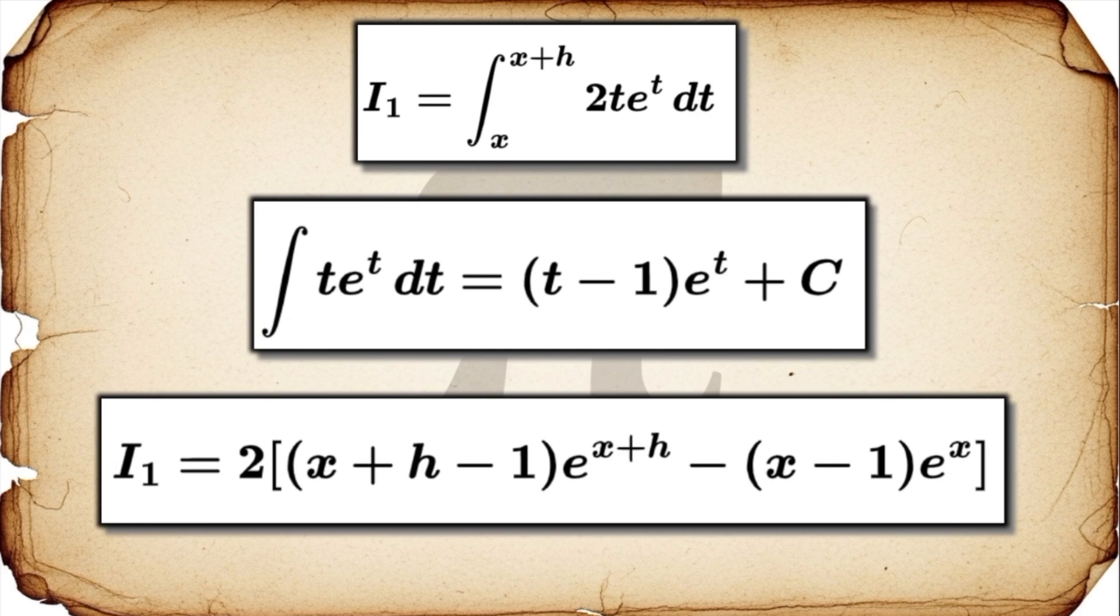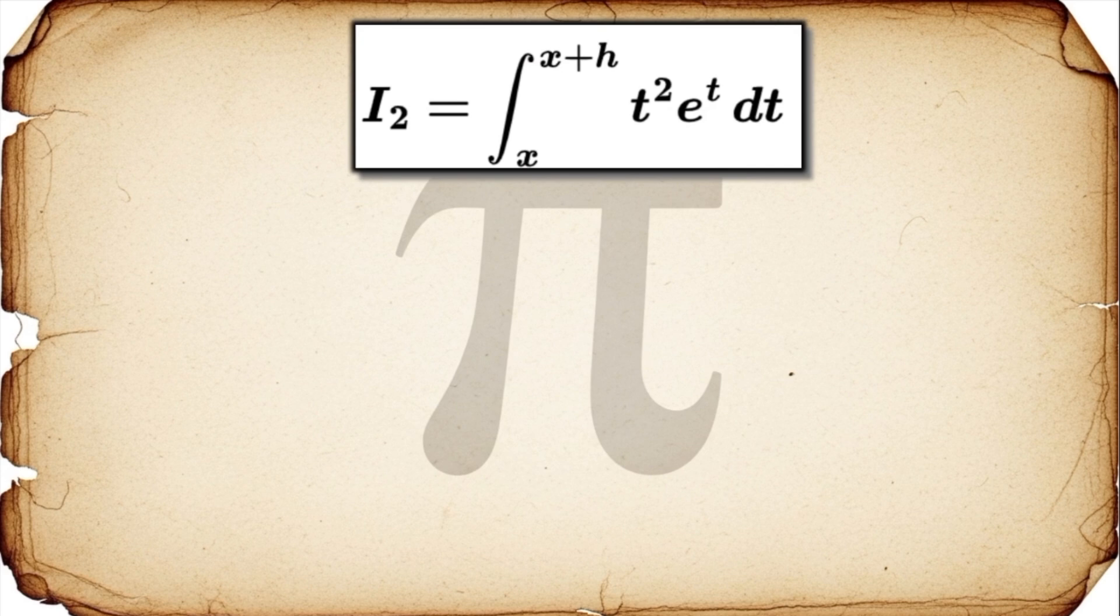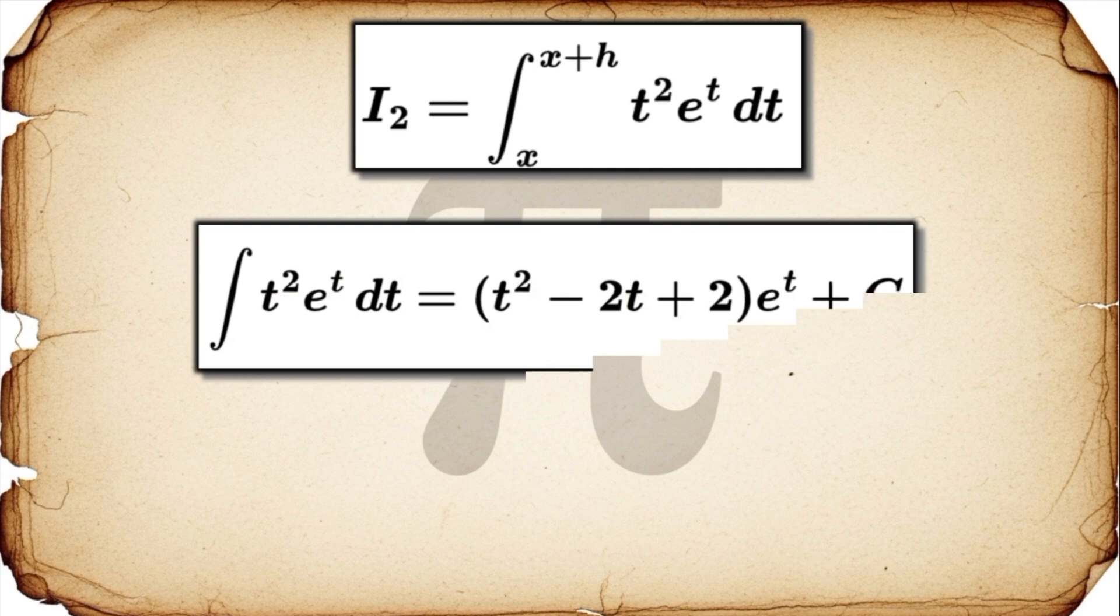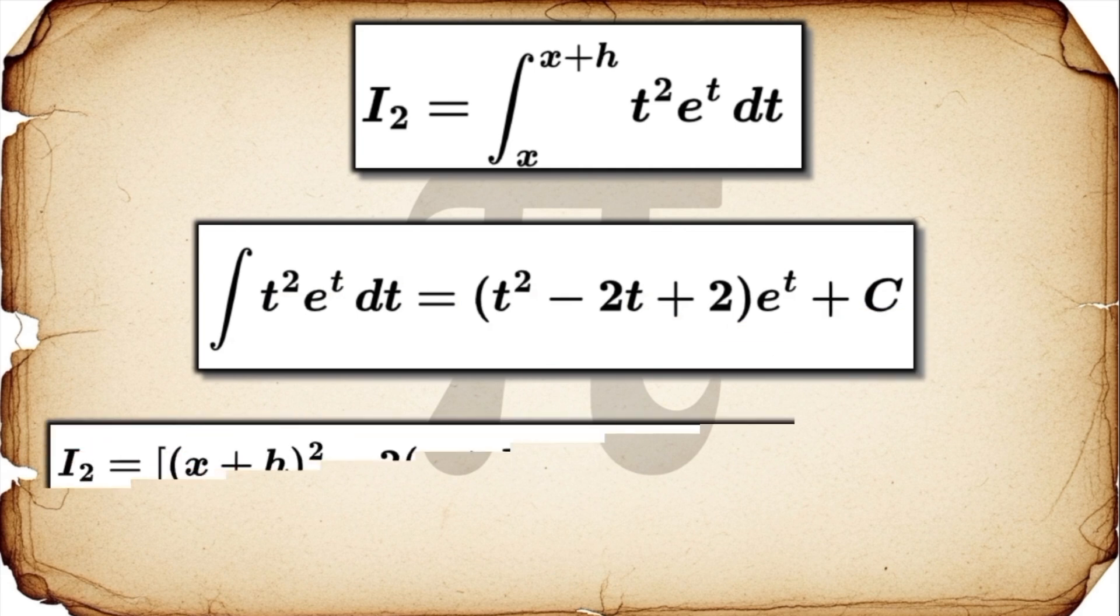Now for the second piece of the puzzle, we need to calculate the integral for the uv' term. In this case, that's the integral of t squared times e to the t. And again, integration by parts is the perfect tool for the job. You work it through, and it gives you this result here.